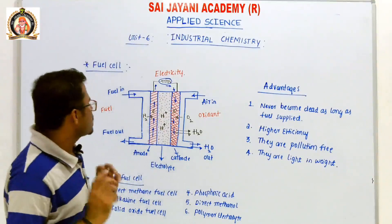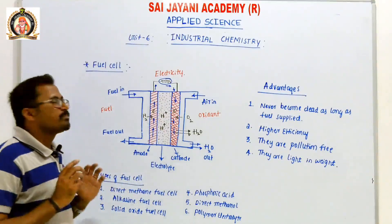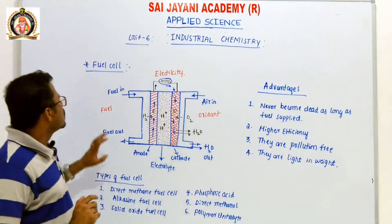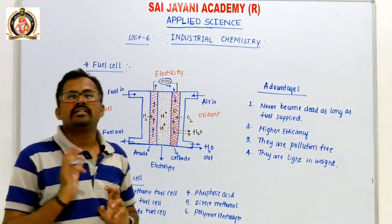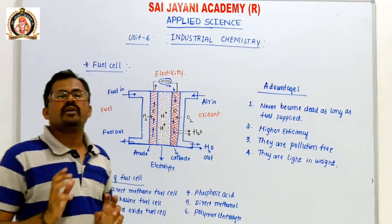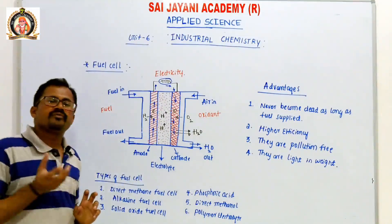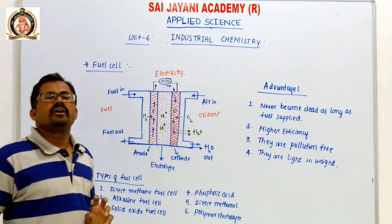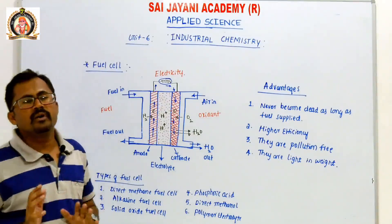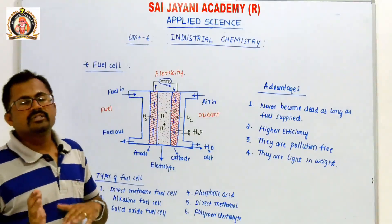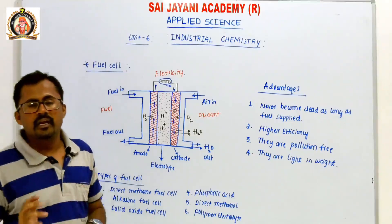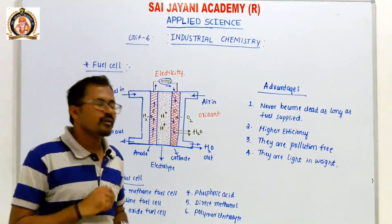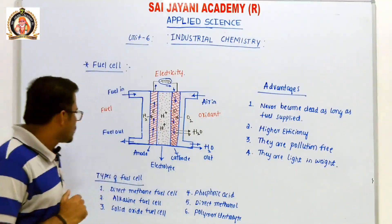The flow of charges produces electricity. So this is the simple working of a fuel cell. In summary, a fuel cell is a device which converts heat energy produced from fuel into electrical energy — in simple words, it converts chemical energy into electrical energy by producing heat energy from the fuel.